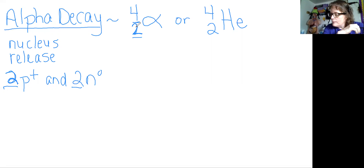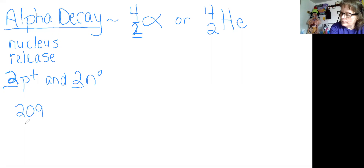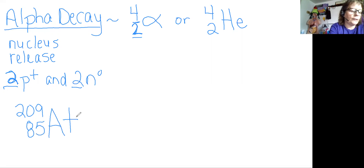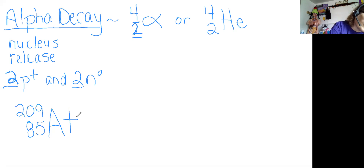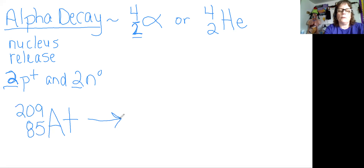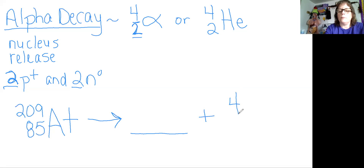Let me give you an example. We start with this element here that has a mass of 209 and an atomic number of 85, and its atomic symbol is At — that is astatine. We have our equation just like a math equation or chemical equation. You have to figure out what that element is going to decay into, because if we change the mass and the number of protons, it's going to be a different element.